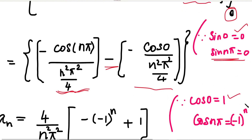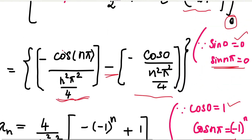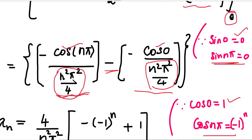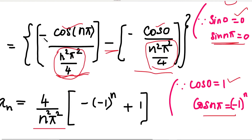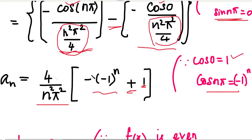After applying limits: cos(0) = 1 and cos(nπ) = (-1)ⁿ. So we get (-1)ⁿ and cos(0) = 1. The denominator n²π²/4 is a constant common factor. Taking 2 outside the denominator, we get 4/n²π² × [(-1)ⁿ - 1 + 1] giving the value of aₙ = 4/(n²π²) × [(-1)ⁿ - 1 + 1]. This is the value of aₙ, and bₙ = 0 as already established.